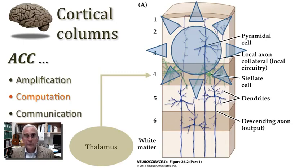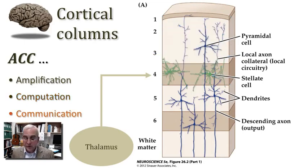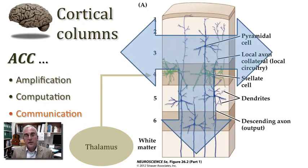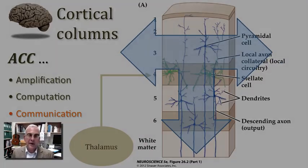Also from this part of the cortex, as well as from deeper layers, this information can be communicated broadly. That communication can happen from one cortical column to the next, from one cortical area to another, and even from cortical areas to more distant regions that lie below the level of the cerebral cortex. So, amplification, computation, communication, the ACC of the cortex. Hopefully, you'll be able to remember that.